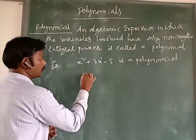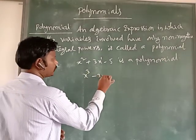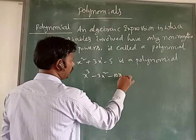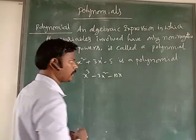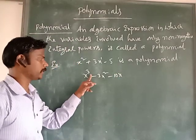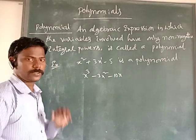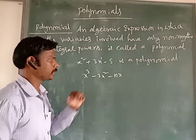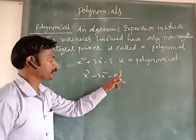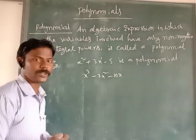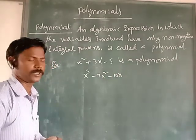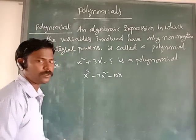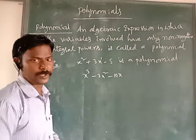Another example: x³ − 3x² − 10x is also a polynomial. See, x² + 3 — 3 is a positive number, x has power 1 which is positive — this type of algebraic expression is also called a polynomial.